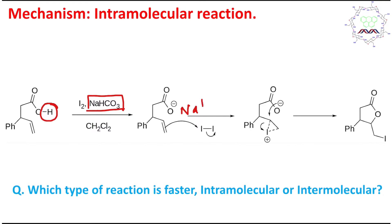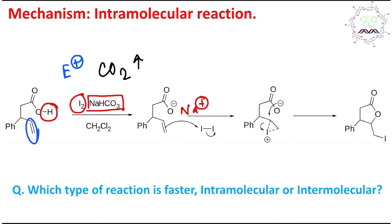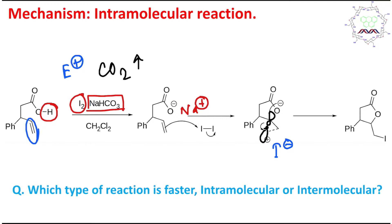Now let's learn the mechanism. Sodium bicarbonate acts as a base to deprotonate the carboxylic acid to its corresponding salt. This is important to remember: reaction with bicarbonate is a key test for carboxylic acid, producing effervescence of CO₂. This acid-base reaction is the fastest step. Second, iodine is an electrophilic reagent that reacts with the double bond. The reaction proceeds through a bridged iodonium ion formation in the first step.